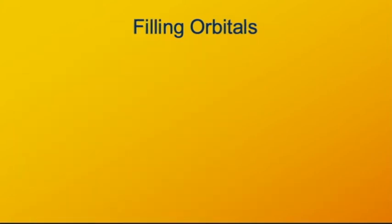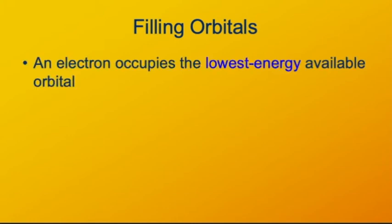So as I mentioned, you can't put all the electrons in the same orbital. Well, what do you do? How do electrons get assigned to orbitals in a stable atom? Well, any electron that you add to an atom is going to go into the lowest energy available orbital.